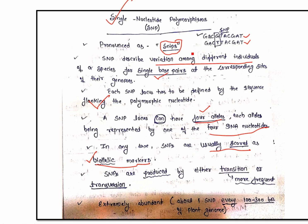One nucleotide replacing another nucleotide is called SNP. SNPs are produced by either transition or transversion. Transition means a purine is replaced by another purine, or a pyrimidine is replaced by another pyrimidine. Transversion means a purine is replaced by a pyrimidine or vice versa. Transition is the more frequent mechanism by which SNPs are generated.